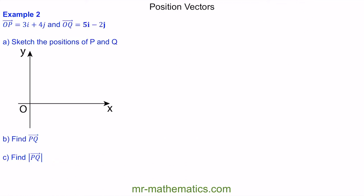For the next question, we've been told that vector OP is 3i plus 4j and OQ is 5i minus 2j, and we've been asked to sketch the positions of P and Q. From the origin, we go 3 in the i direction and 4 up for P — this will be about here — giving column vector (3, 4). For OQ, we go further in the i direction but down 2 in the j direction, giving column vector (5, -2).